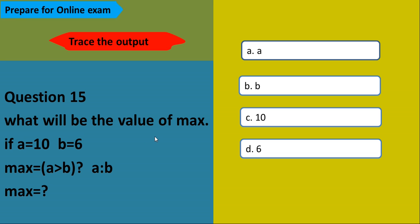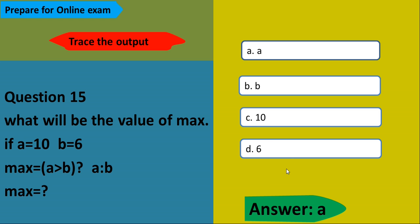What will be the value of max? A equals 10, B equals 6, max equals A greater than B — using the ternary operator. If A is greater than B, it returns A; otherwise it returns B. Since 10 is greater than 6, it is true, so max equals A, which is 10. The output is 10.